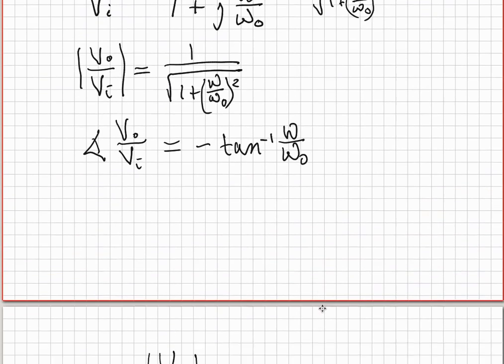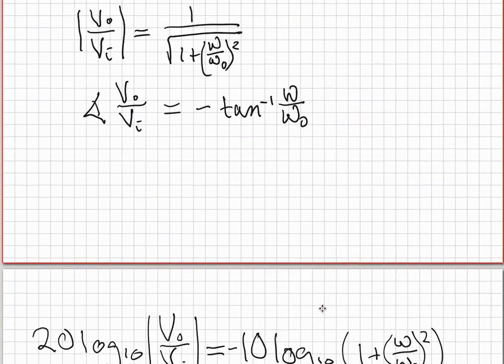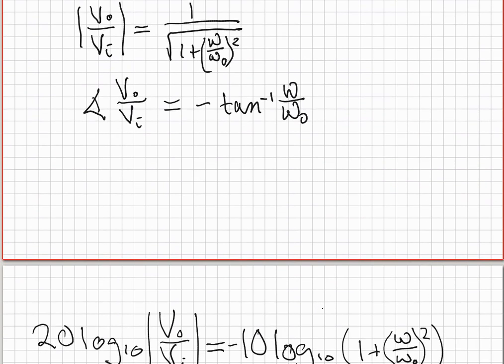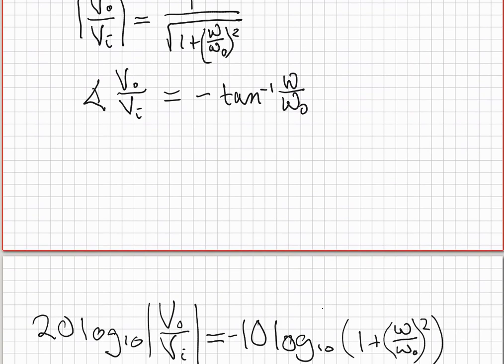Now what I'd like to do is take this expression for the magnitude of V out over V in and put it in decibels. So to do that, we take 20 log of V out over V in, which if you simplify it down becomes this expression, where the 20 became a 10 because of the square root, and the negative sign came because the square root of the thing is in the bottom, and now this is just inside the parentheses of the log.